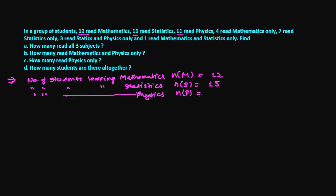Next, 4 read mathematics only — meaning they read mathematics and none of the other subjects. 7 read statistics only — just statistics, not other subjects. 3 read statistics and physics only — only those two subjects. And 1 reads mathematics and statistics only.